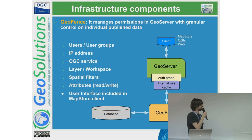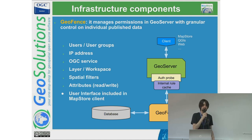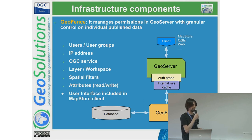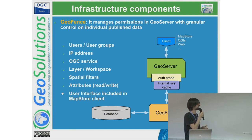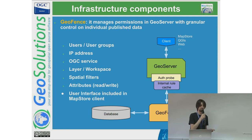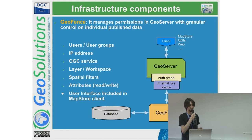They are using Geofence because they need to manage access to services and layers based on group IP addresses. They also need specific services available for specific users, and access to layers and workspaces in their system. Geofence also has a client user interface integration so they can manage through MapStore the rules they need. This plugin is also available in the core of MapStore to allow restrictions and authentication through layers.